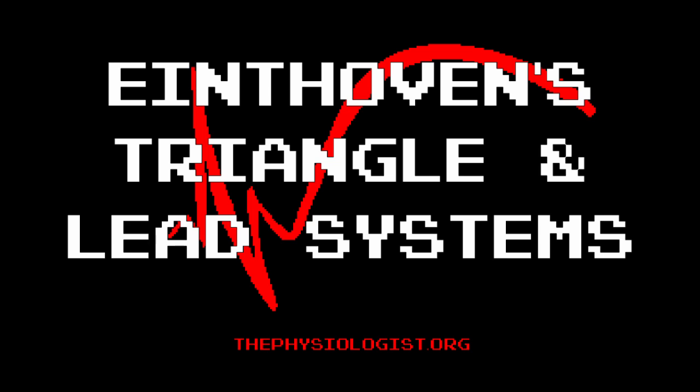We're going to start with the lead systems that combine to make up the 12-lead ECG. If you've ever performed an ECG, you'll probably have noticed that there are only 10 physical leads that connect the patient to the monitor, and are wondering why it's called a 12-lead ECG if there are only 10 leads?